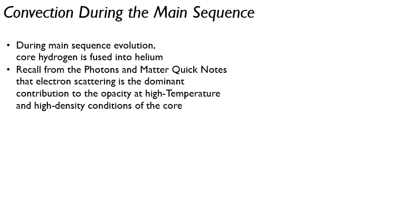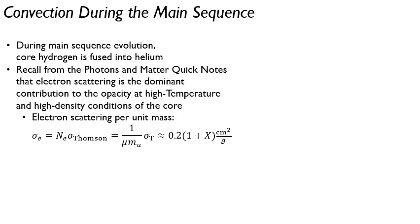And you might recall from the photons and matter quick notes that when you're at high temperatures and densities, the opacity is dominated by electron scattering. And the electron scattering cross section is discussed in the textbook. It is related to the Thomson scattering cross section. So it's basically just the number of electrons you have times that Thomson scattering cross section is going to determine your electron scattering cross section. And this is number here. We're looking at per unit mass.